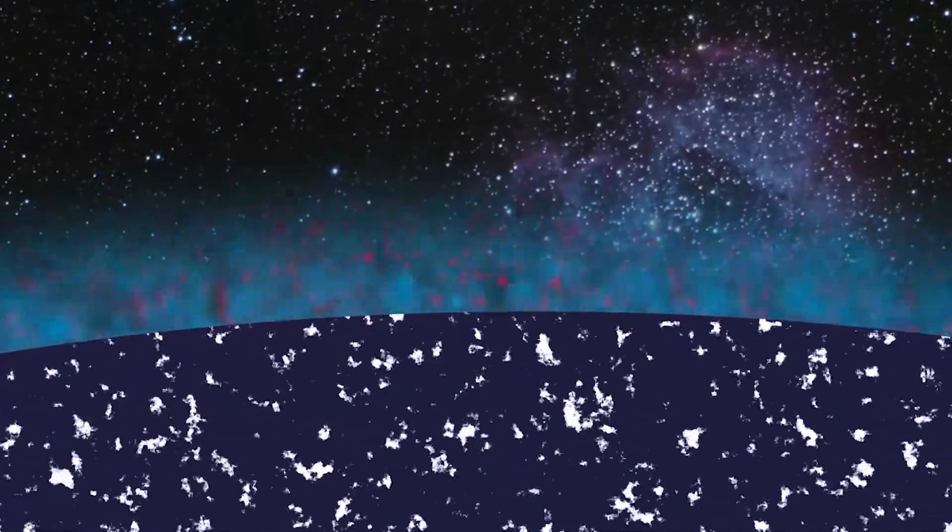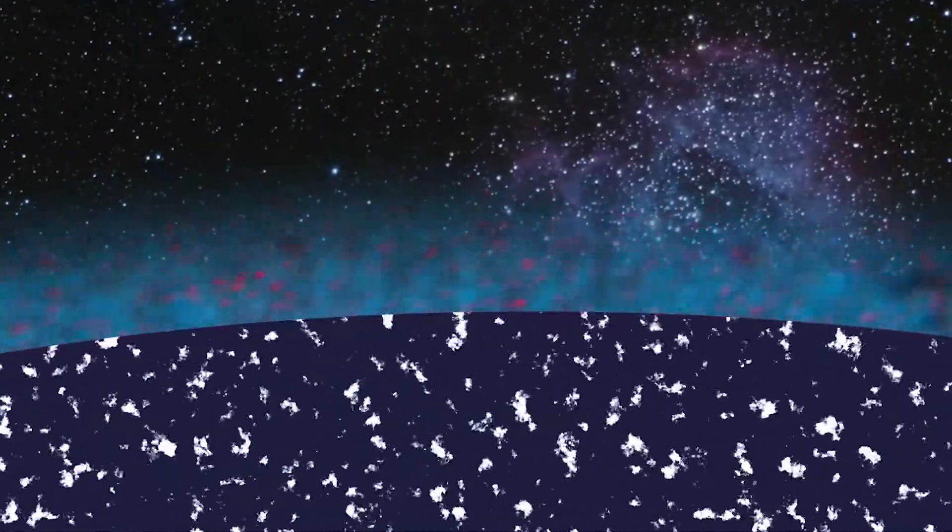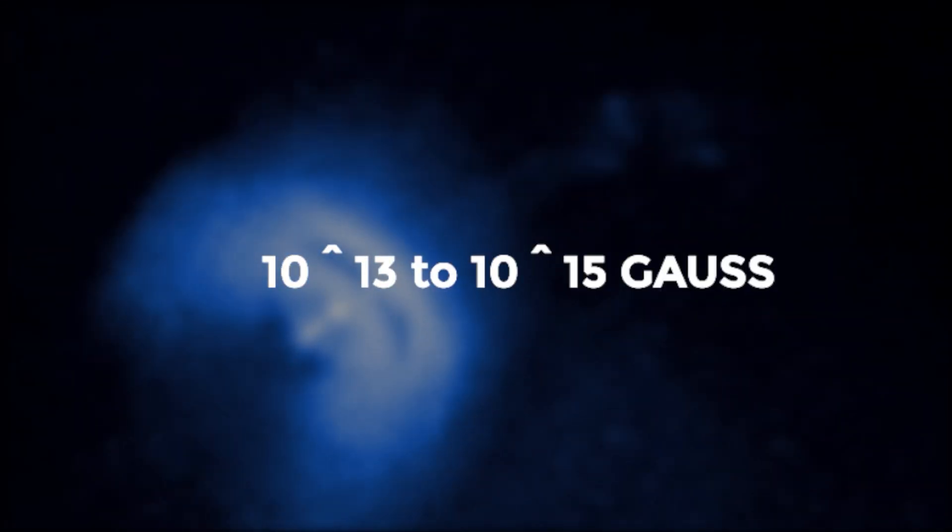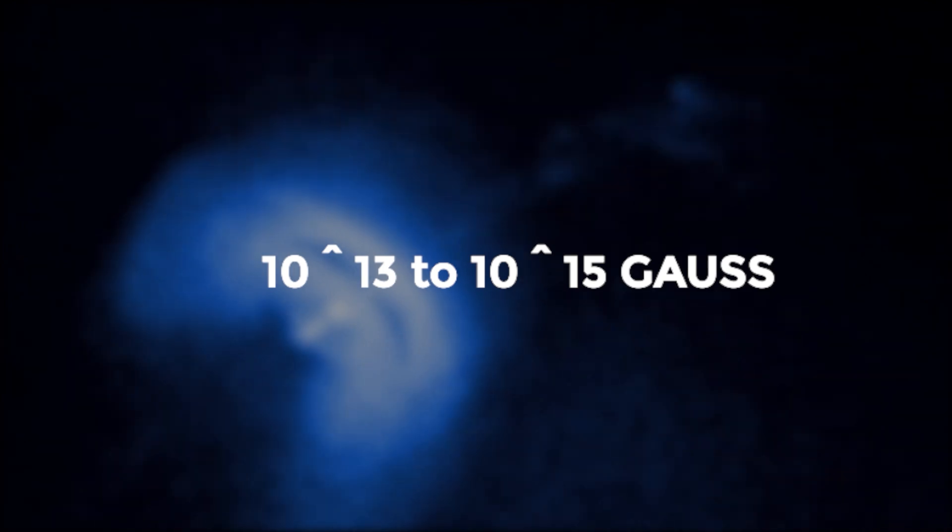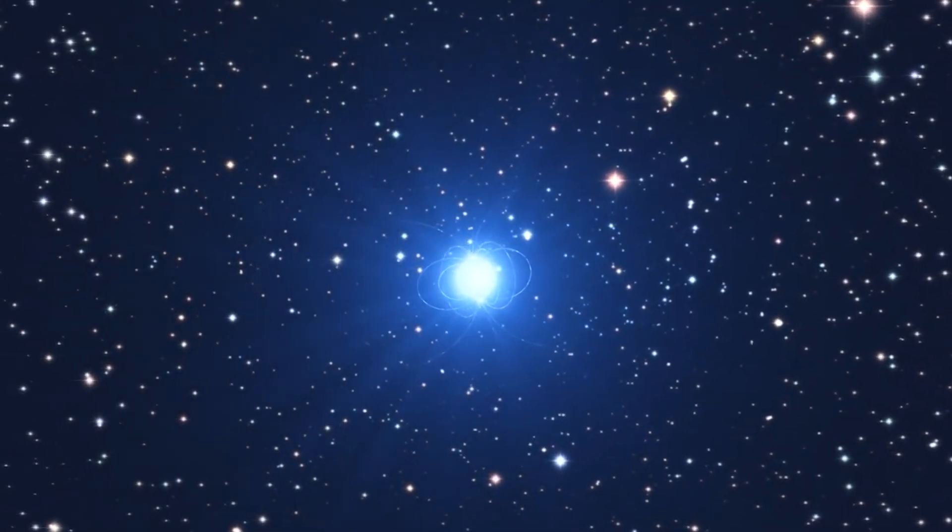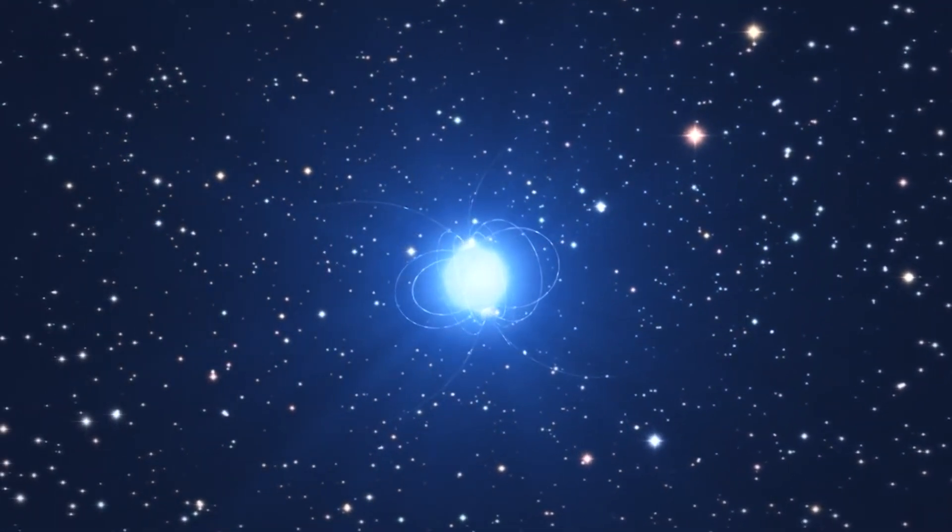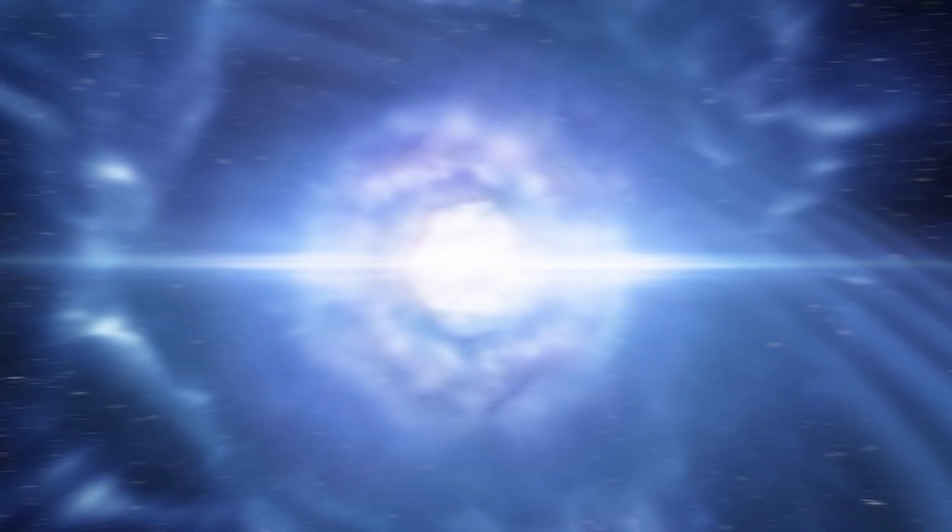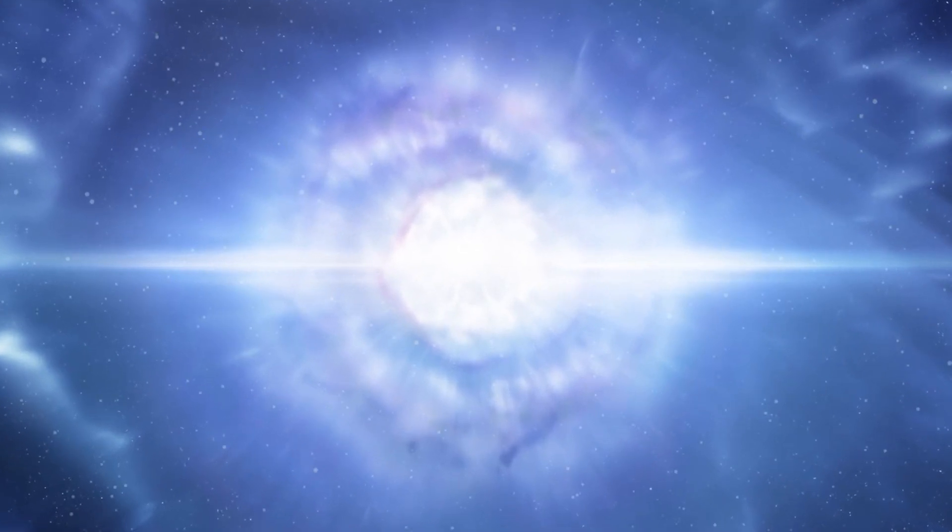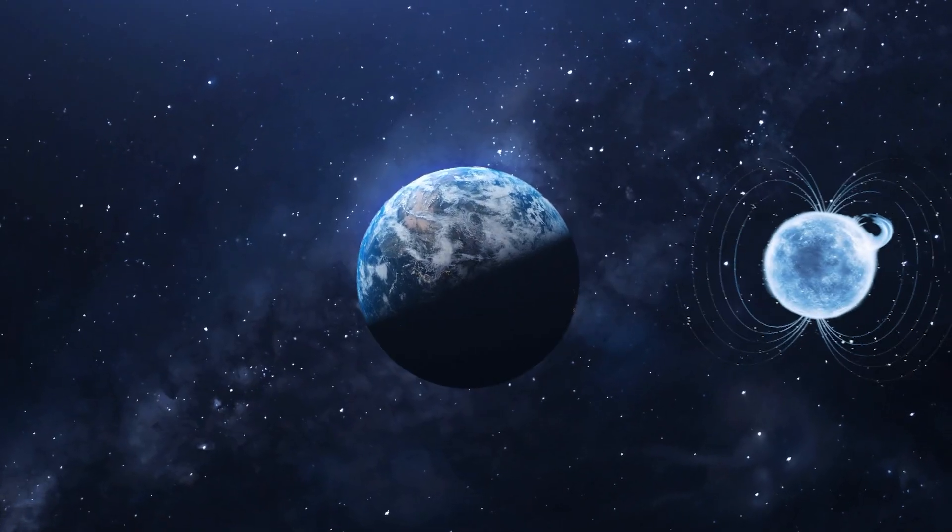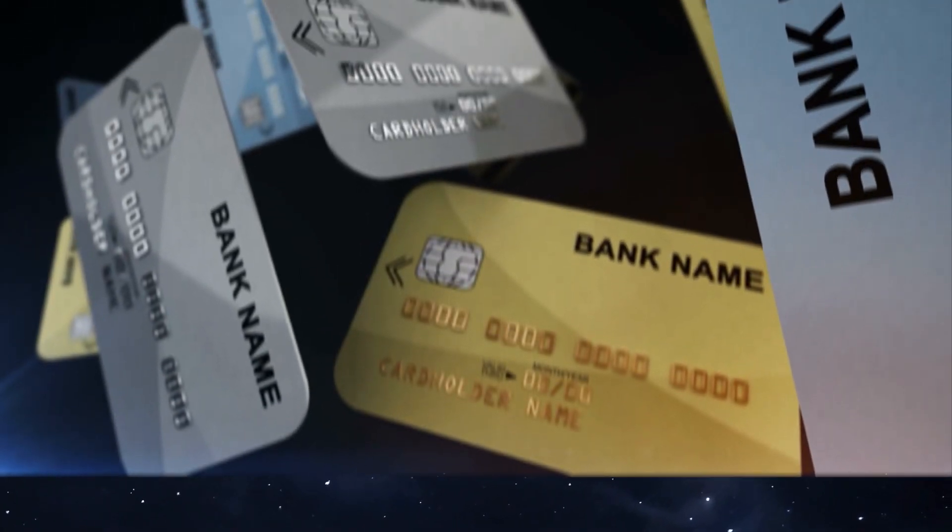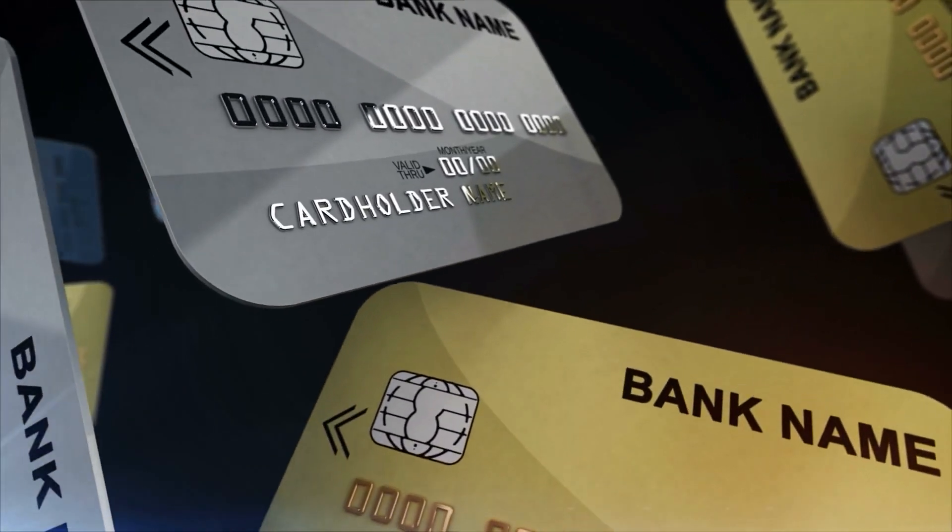The magnetic density of a magnetar is astonishingly high, ranging from 10 to the power of 13 to 10 to the power of 15 Gauss. This level of magnetism makes magnetars the most powerful magnetic objects known in the Universe. To illustrate the extreme strength of their magnetic fields, consider this: If a magnetar were positioned halfway to the Moon, its magnetic power could erase all credit cards on Earth.